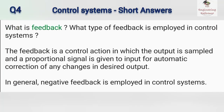What is feedback, and what type of feedback is employed in control systems? Feedback is a control action in which the output is sampled and a proportional signal is given to the input for automatic correction of any changes in desired output. In general, negative feedback is employed in control systems.